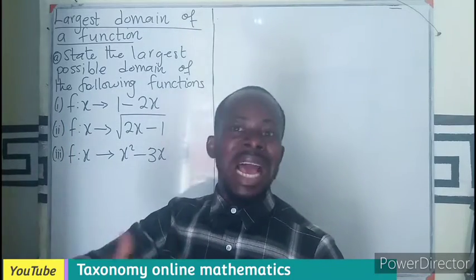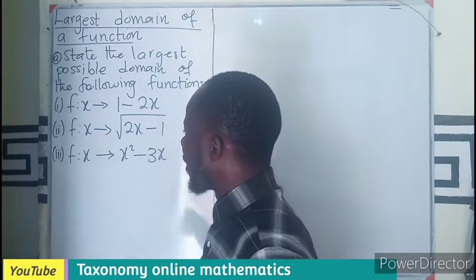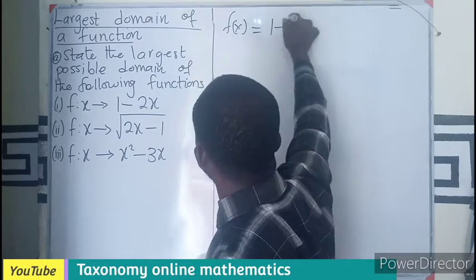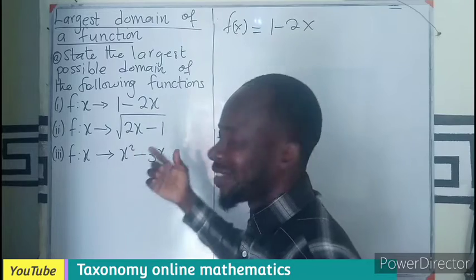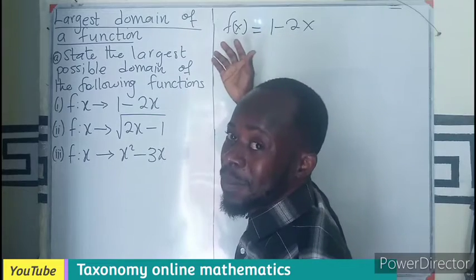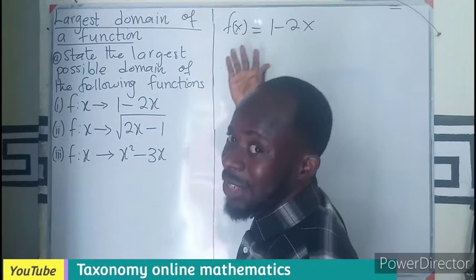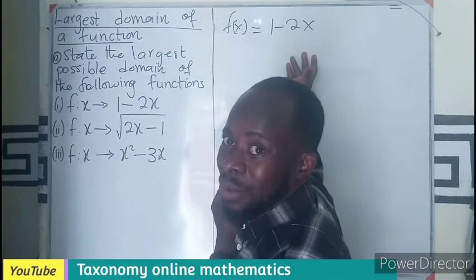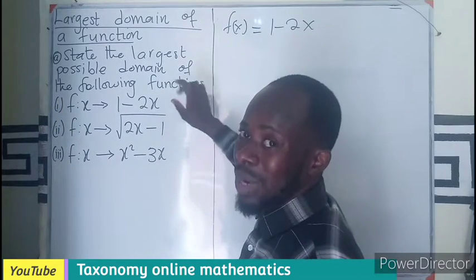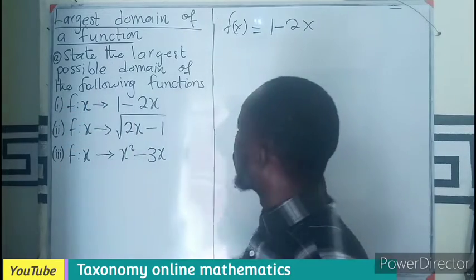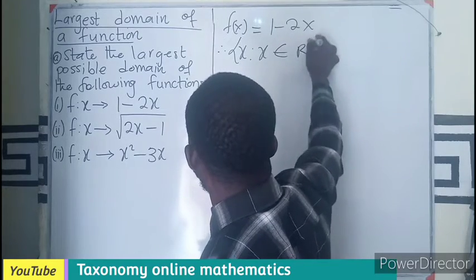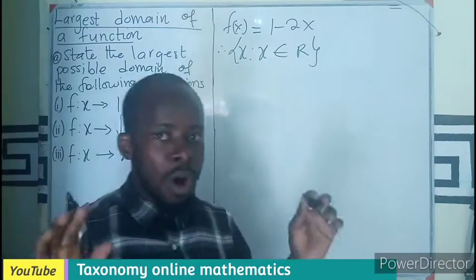For the first example, we have f(x) = 1 - 2x. What values of x, when placed in for x, will still make this function defined? Zero will give you one, negative one will give you a value, positive one likewise — so all real numbers work. There is no number you can put in that will not give you an answer, so the domain is the set of x such that x belongs to all real numbers.